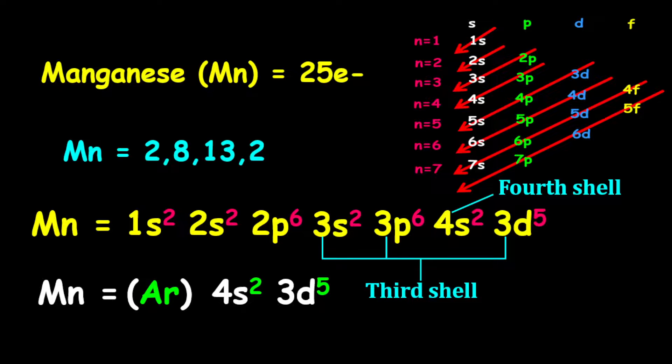Therefore, there are seven valence electrons on the manganese atom. Notice also that manganese is found in the seventh column of the periodic table.